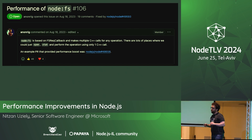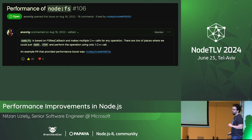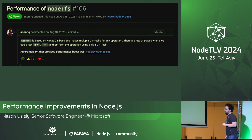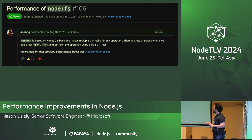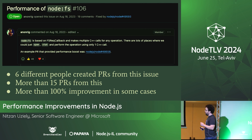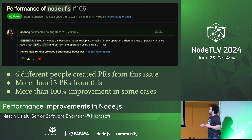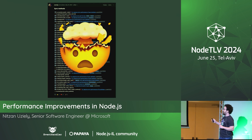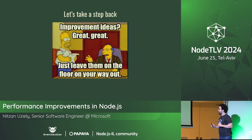Here's an example of one of these issues. Someone opened this issue about performance issues in the file system — we call the file system many, many times instead of once. This specific issue led to six different people, not all of them collaborators, creating PRs. More than 15 PRs were created from this one issue, with more than 100% improvement in some cases.